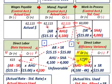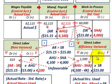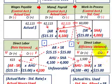We debit it for $1,500 — that's unfavorable because actual hours used of 4,100 is greater than standard hours allowed of 4,000. It would have been favorable had we used fewer hours — say actual hours of 3,900 versus standard hours of 4,000 — in which case the difference would be recorded as a credit, a reduction in the direct labor efficiency variance.